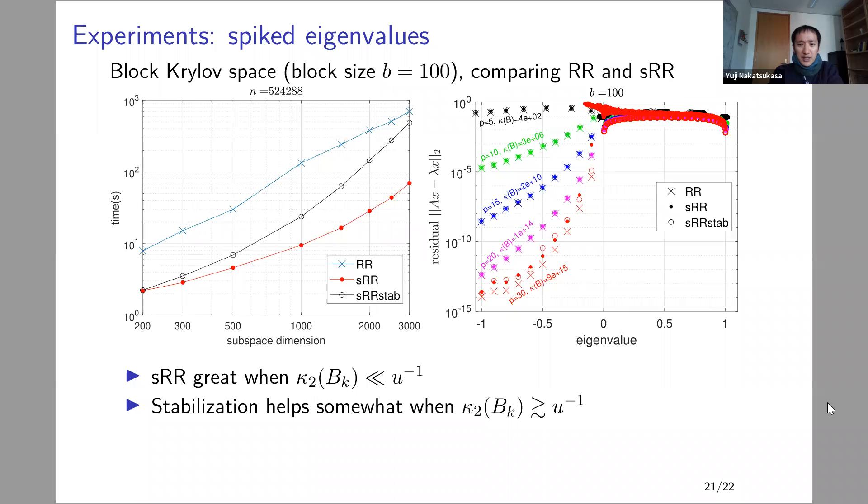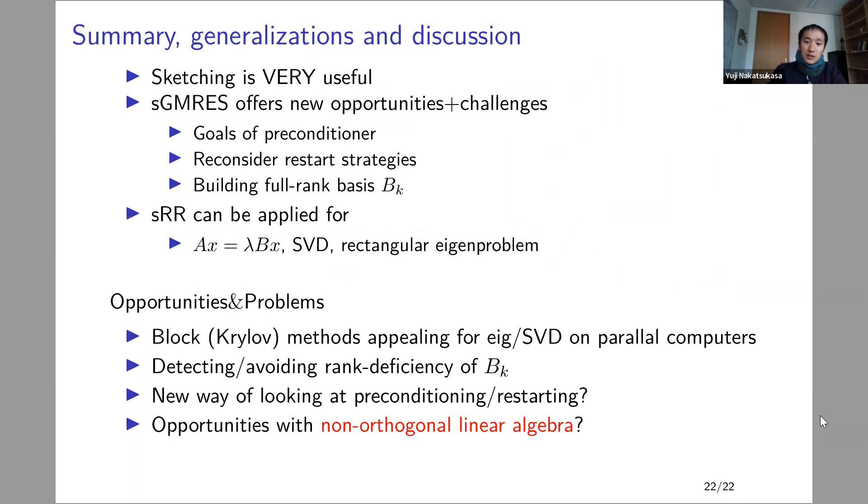A final experiment, I guess, just to see how sketch Rayleigh-Ritz is able to find the extreme eigenvalues of a rather big matrix using a block Krylov method. Basically, it's the same observation. We're able to find the solutions up to constant factor of deviation from the standard Rayleigh-Ritz using sketching. So this is pretty much it.